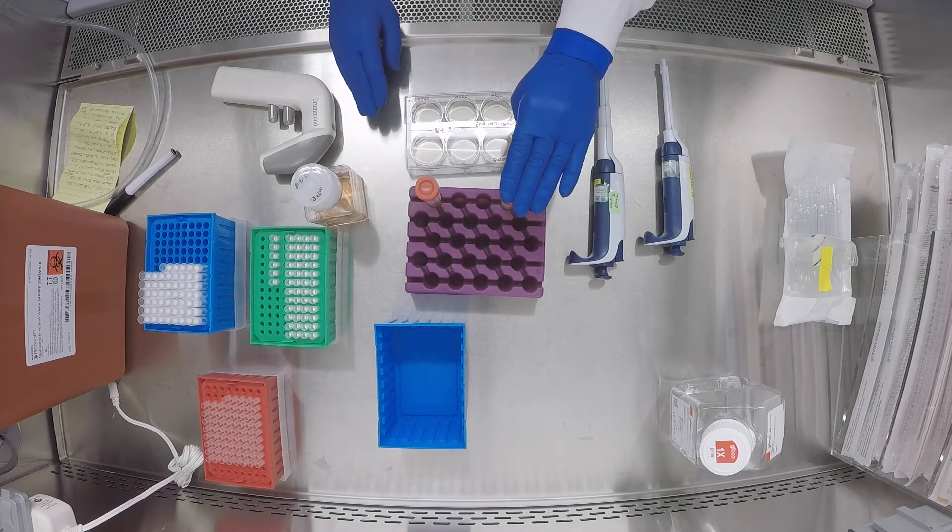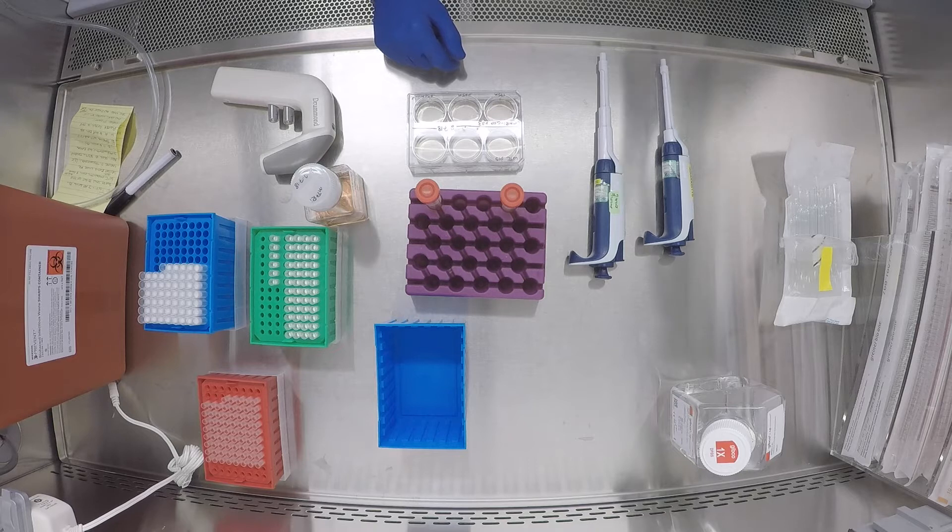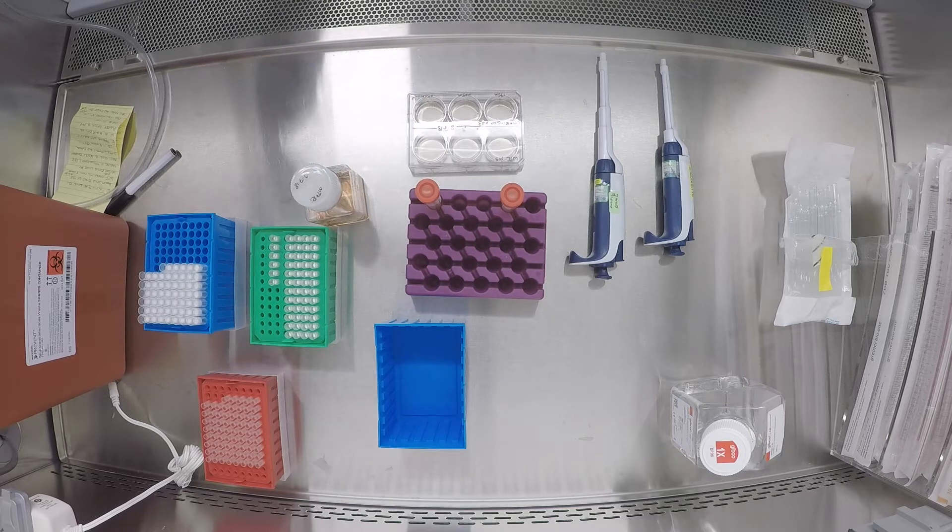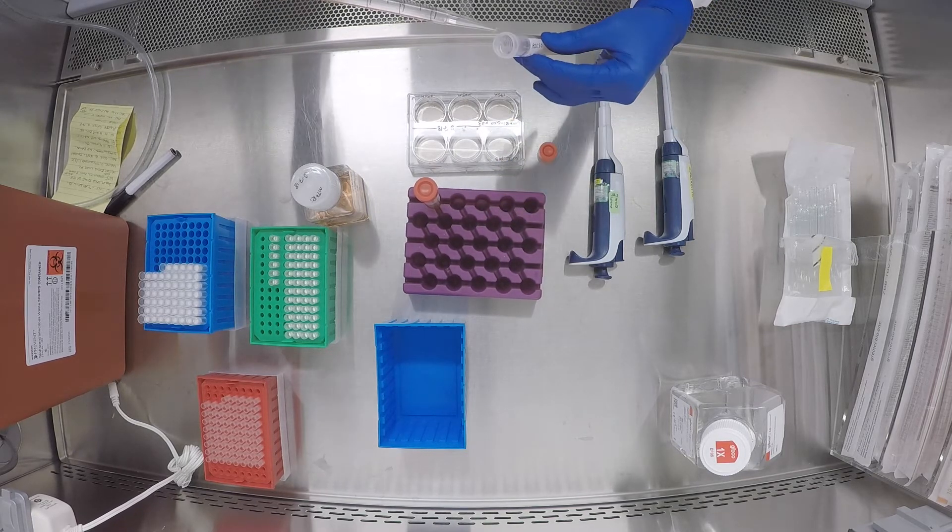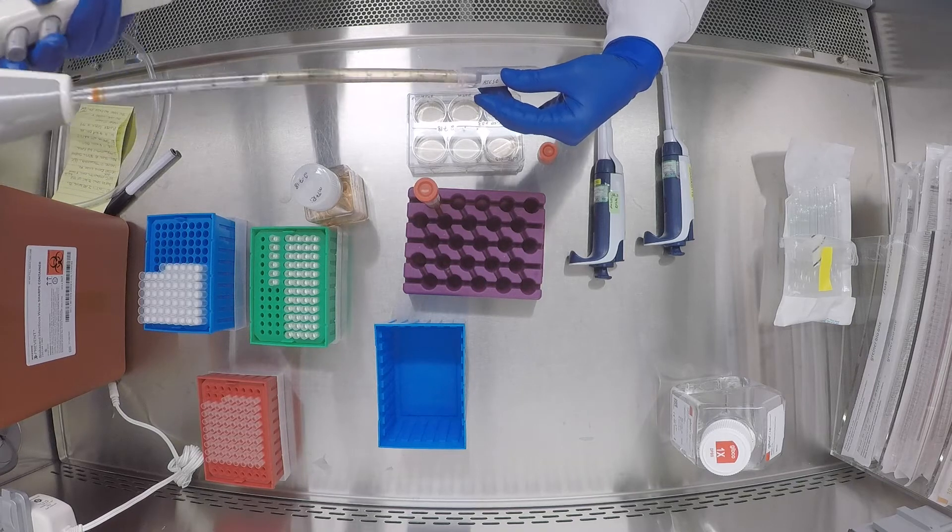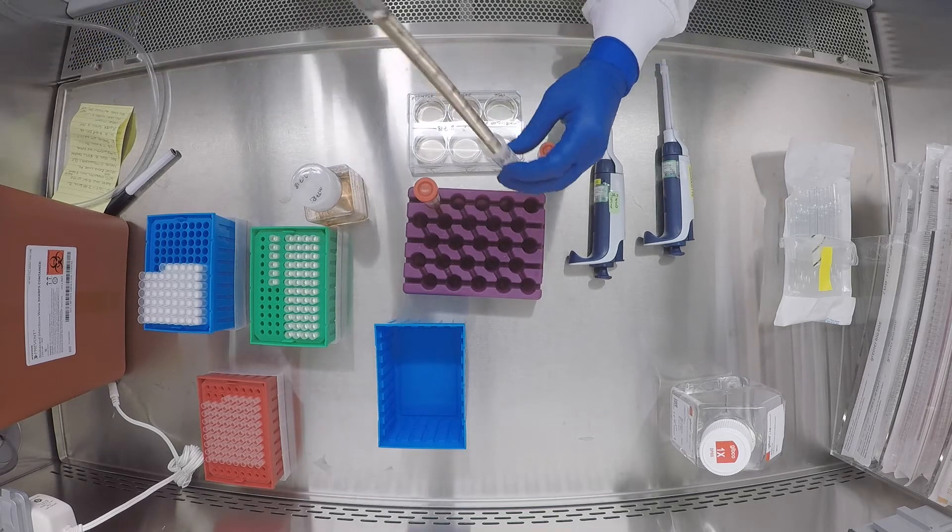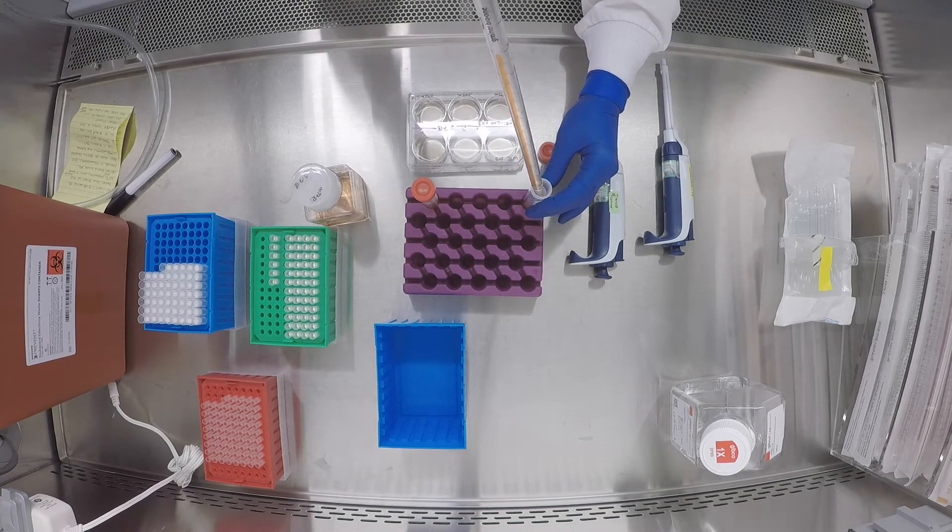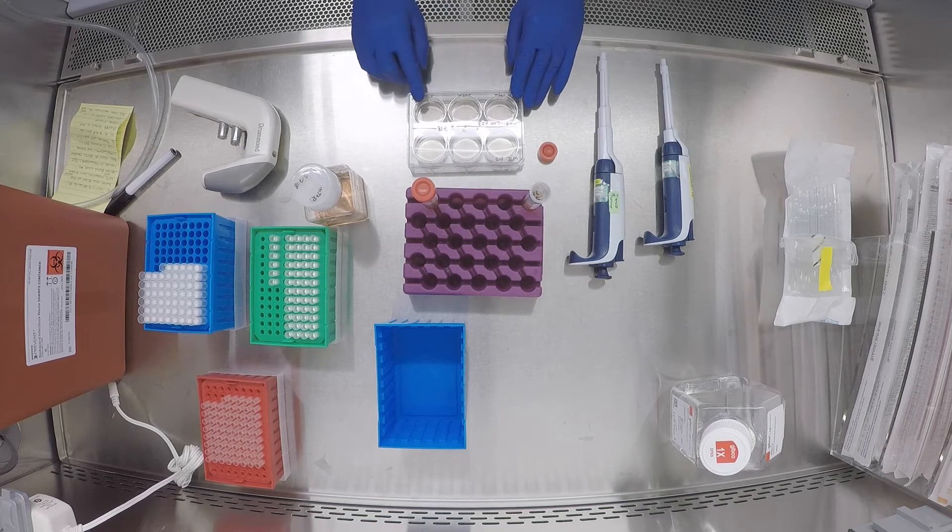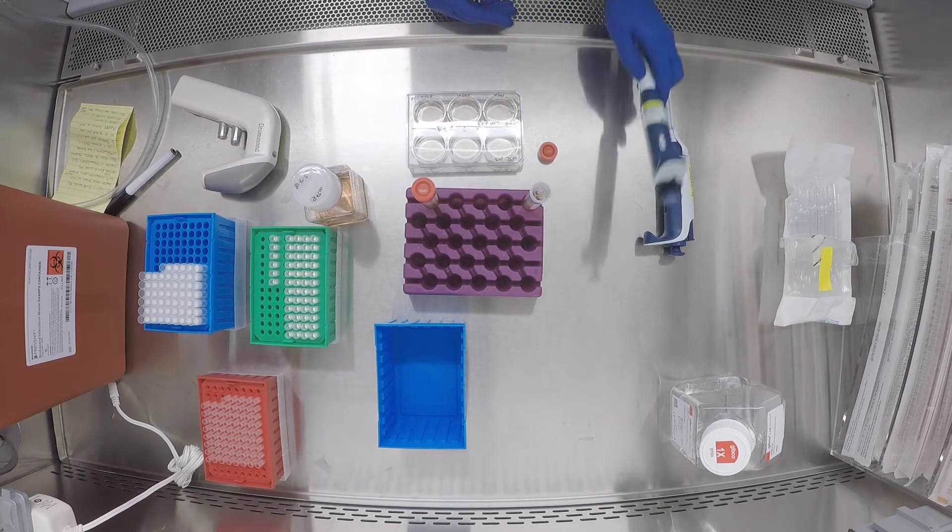Now I have my two cell lines, the WTC parental line and my gene edited line. Assuming that potentially I've had some settling in my cells, I'm going to gently re-suspend them again. I'm plating the cells in three different densities, 175, 225, and 250,000 cells per well. I've already made those calculations based on the concentration of my cells.